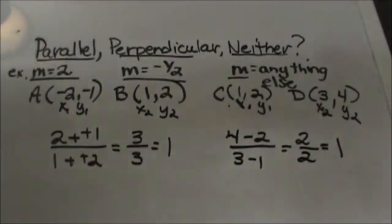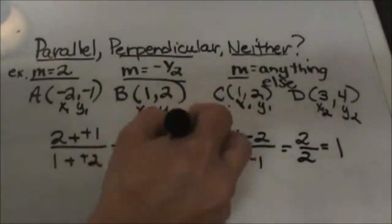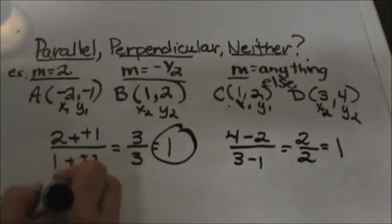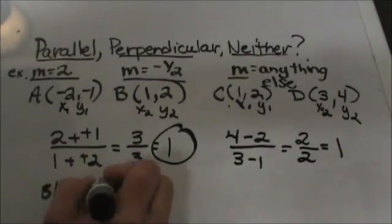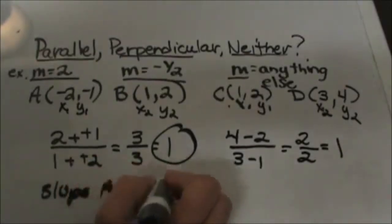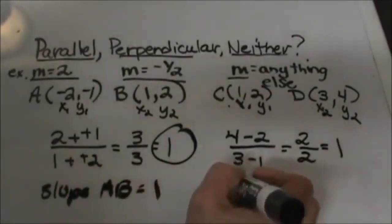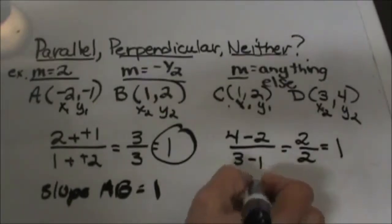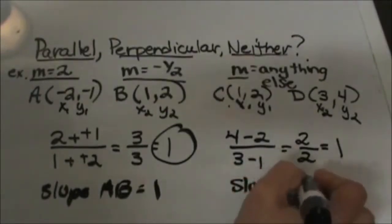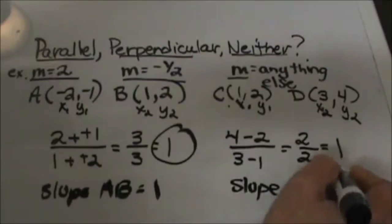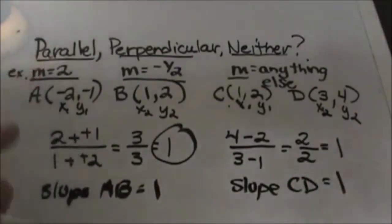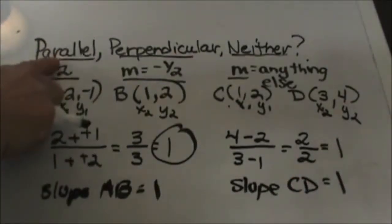So now let's compare the slopes of our lines. The slope of AB is equal to positive 1. The slope of CD is also positive 1. So they have the same slope. So they are parallel.